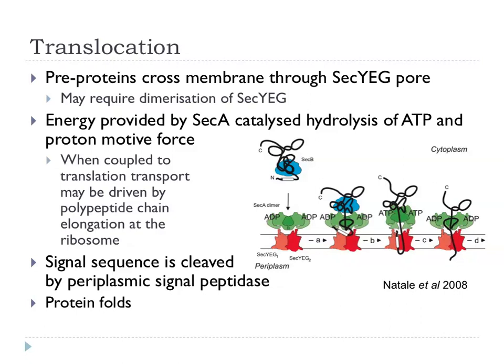SecYEG forms the pore, and the energy is provided by SecA hydrolyzing ATP. The proton motive force also probably plays a role in translocation of these proteins. Sometimes you get coupling of secretion with the elongation of the ribosome — protein synthesis itself — which also helps drive proteins through the system.